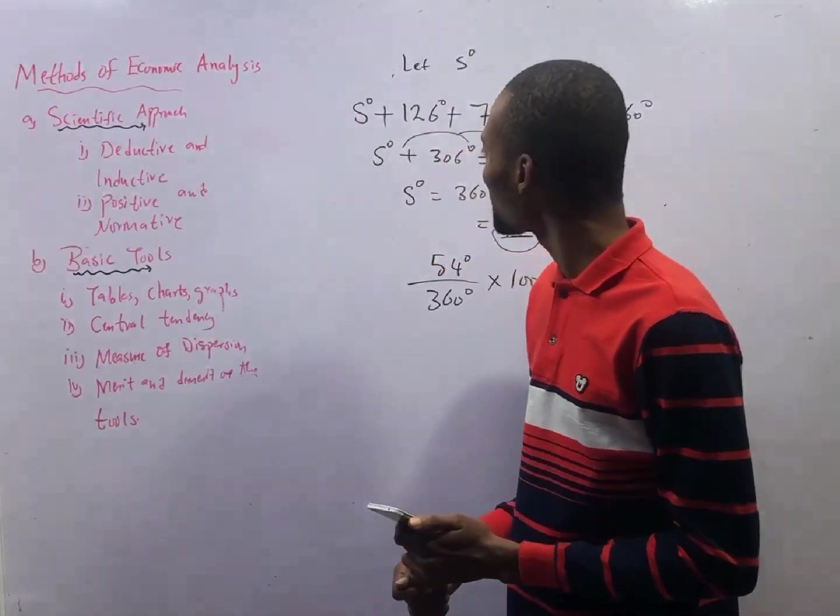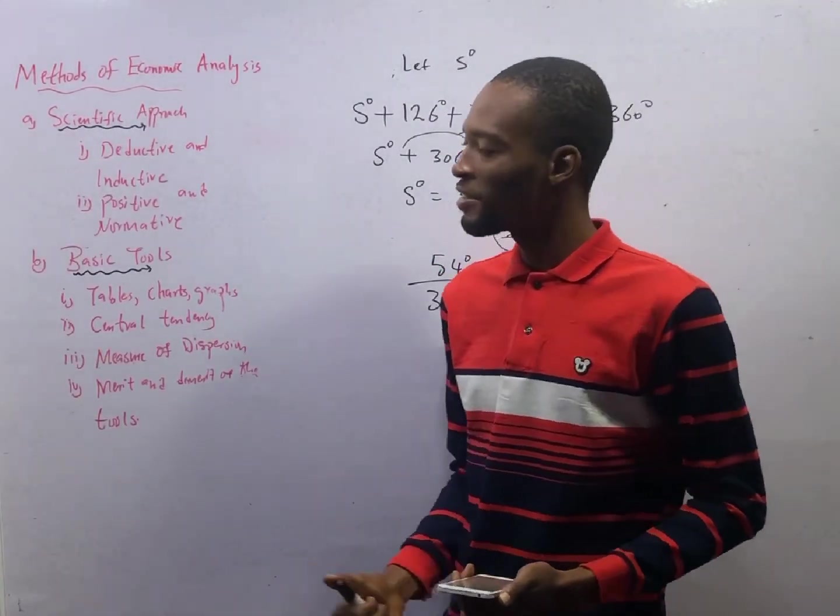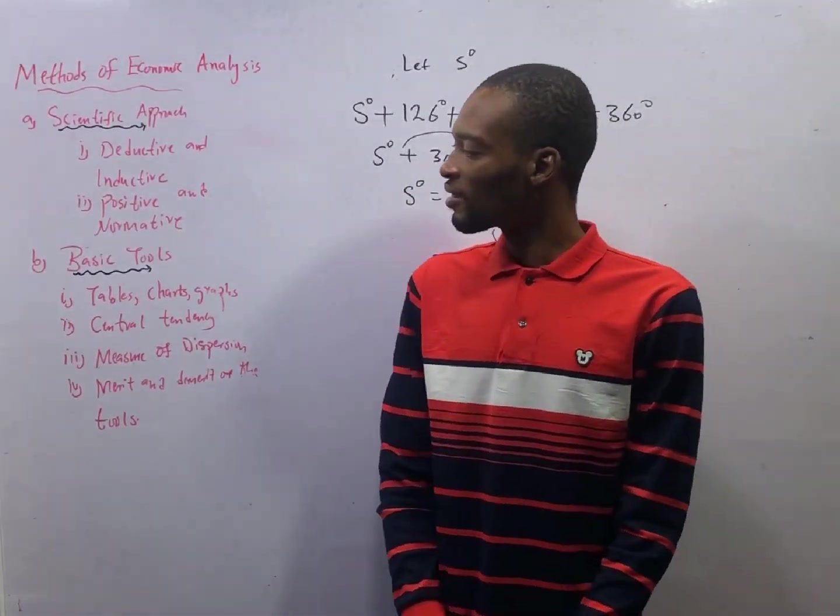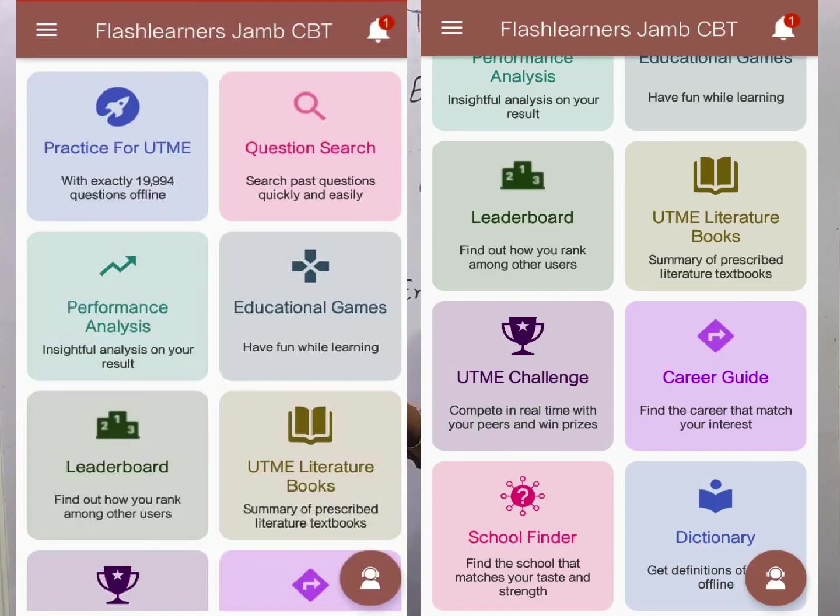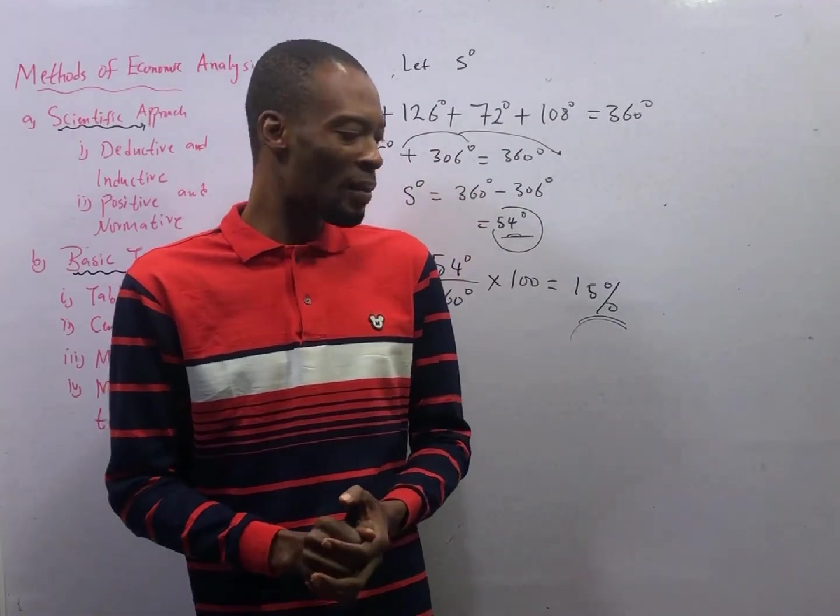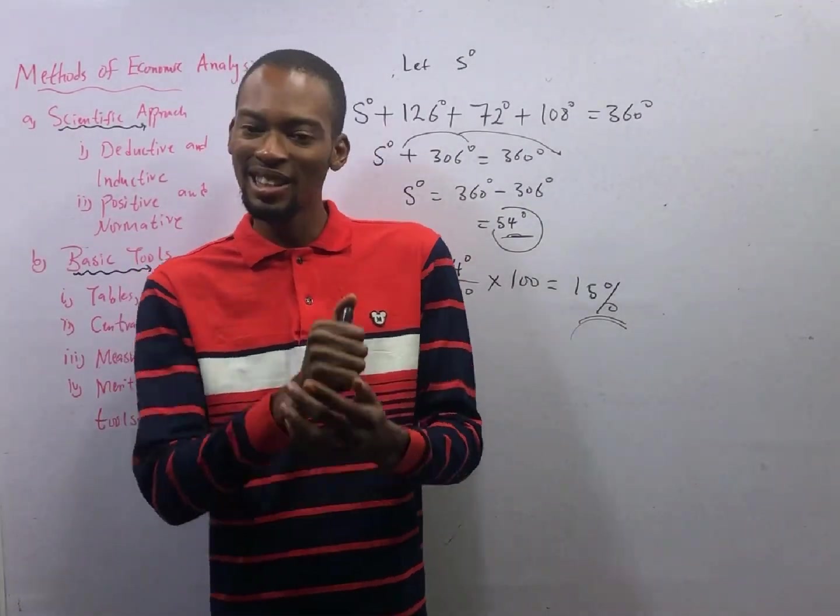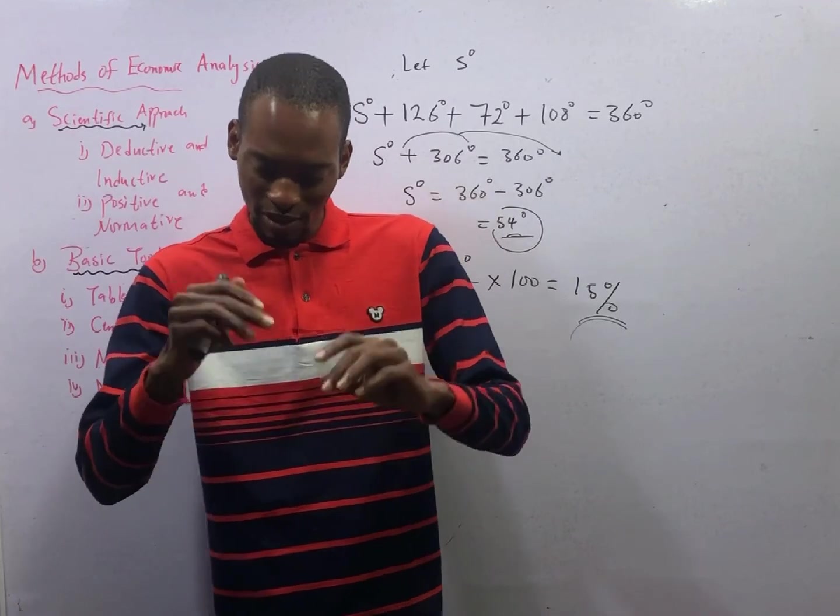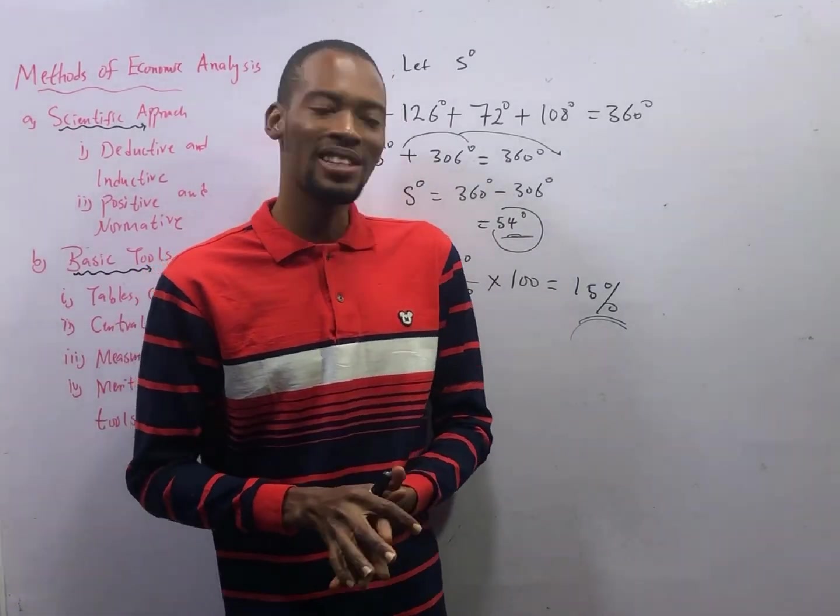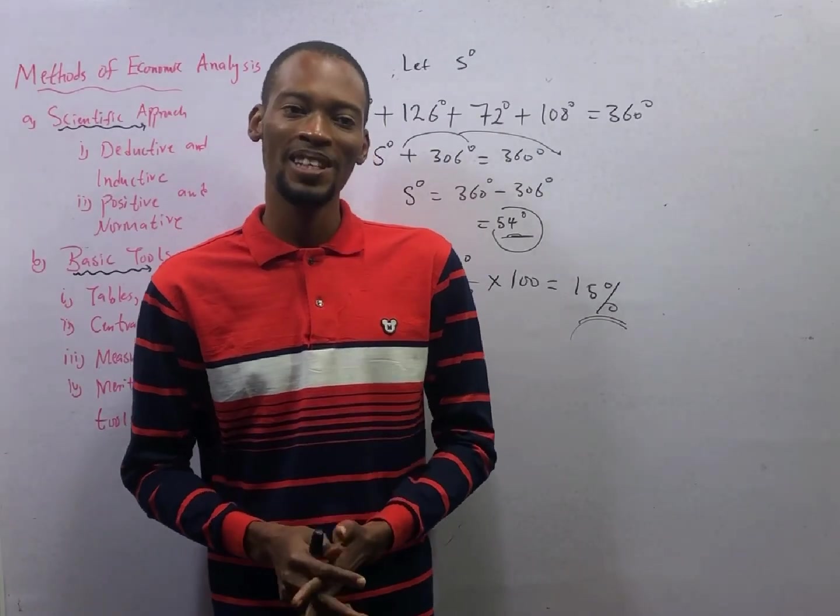Ladies and gentlemen, that brings us to the end of this class. For your assignment, you open the Flash Learners Jam app, go to question search, type pie chart, answer the questions that follow. You can answer questions by topic using the Flash Learners Jam app. I hope you enjoyed this episode, see you in episode 10.